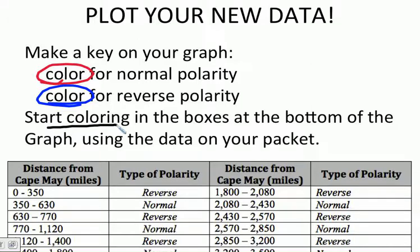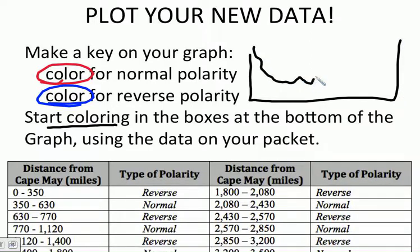Now, to complete this, you are going to be color coding the boxes at the bottom of your graph. So, you have your sea floor graph that you've been working on, right, with your continental slope, your mid-ocean ridge, your seamount, your second slope, continental shelf.